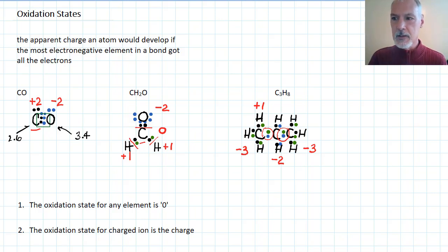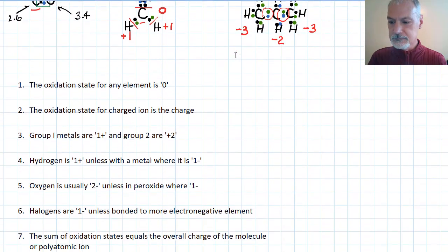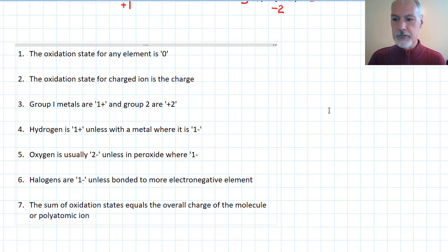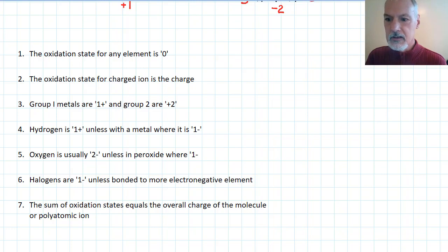Now, rather than doing Lewis dot diagrams for every single substance, we've developed a set of rules. And here are those rules. So any element has an oxidation state of zero. So we'll quickly go through what these mean. So if I have something like Fe, its oxidation state is zero. If I have something like O₂, again, its oxidation state will essentially be zero. So I'll write those in red above here.